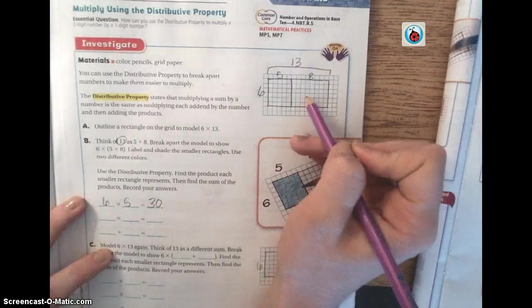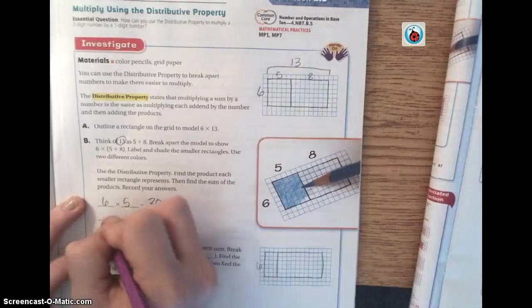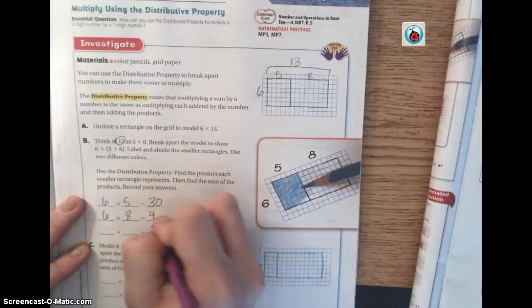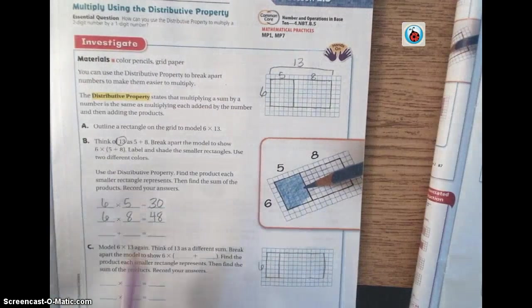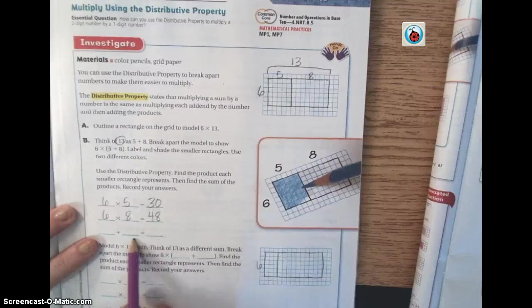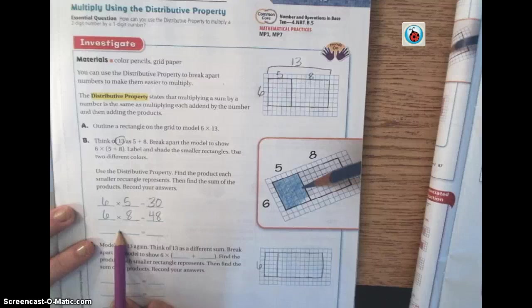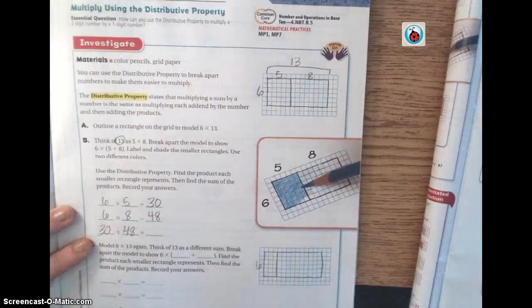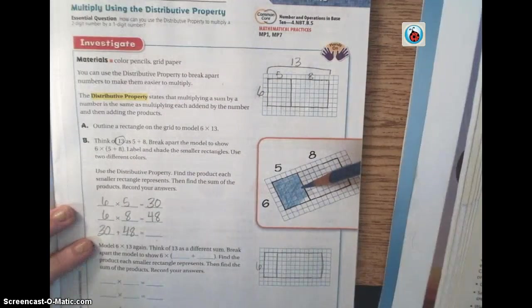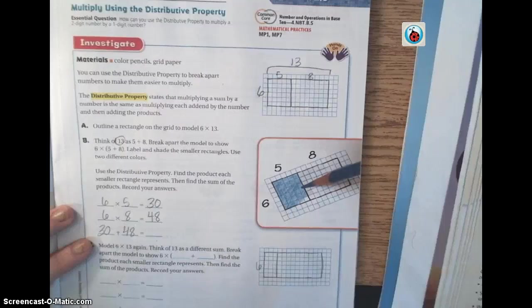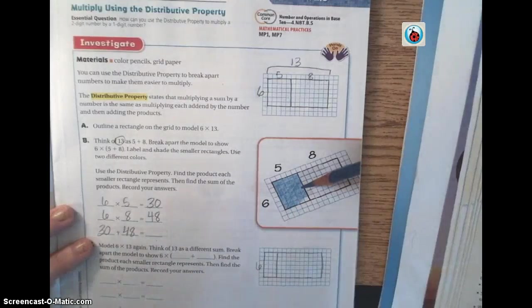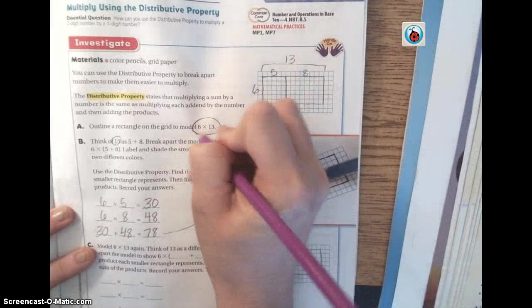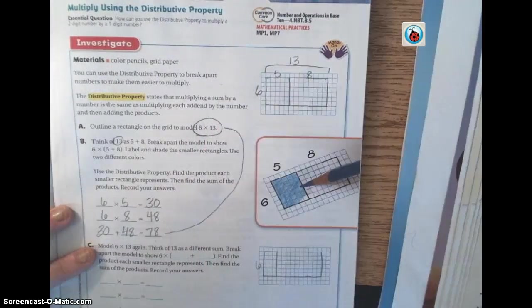Then this rectangle is representing what? Britta? 8 times 6. 6 times 8, or 8 times 6 is the same thing, right? 6 times 8 is? 48. And then notice that right here they gave us the equation outline, but it's an addition. So what two numbers do you think we're going to add together to find our product here? Emma? 30 and 48. Awesome. And 30 plus 48 is what? Caden? 78.